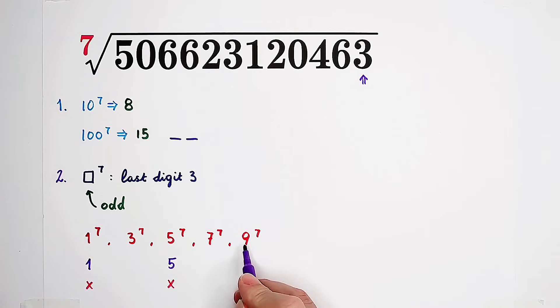And for 9, 9 to the power of 1 is 9, 9 to the power of 2 has the unit digit 1, to the power of 3 unit digit 9, to the power of 4 unit digit 1. So 9 to the power of 7, you'll have the unit digit 9. Actually, also impossible.